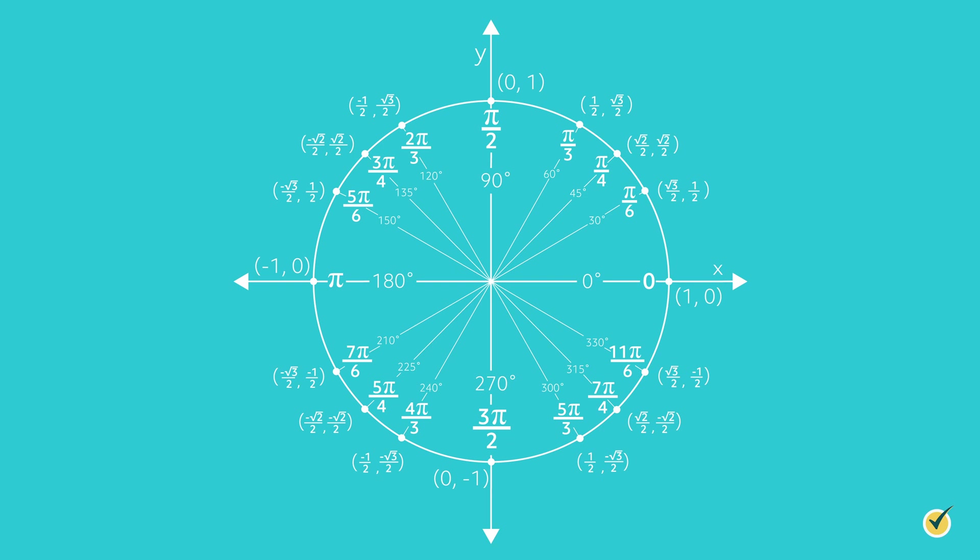I want you to try to find a couple trig values on your own using the unit circle. For now, we will put it on the screen so you can refer back to it, but eventually you may want to memorize it since these values come up frequently in mathematics. Number 1, cosine of 180 degrees. 2, sine of 2 pi over 3. 3, tangent of pi over 4. Go ahead and pause the video and see what you can come up with.